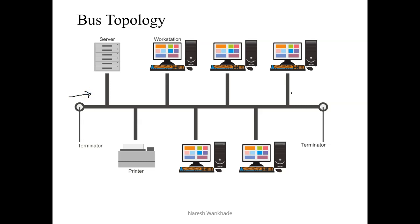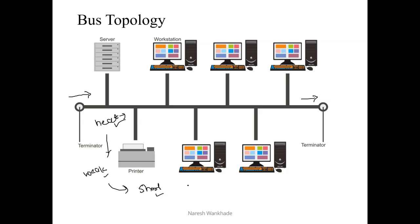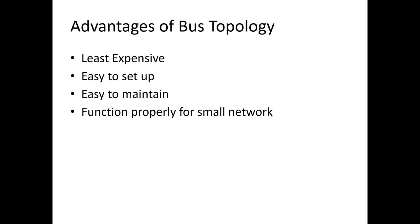The signal flows from one end to the other, and while traveling, heat is generated. Because of this heat generation, signals become weak, and because of this weakening of the signal we have certain limitations on the number of nodes or computers. That is why bus topology must be used only for small network areas.